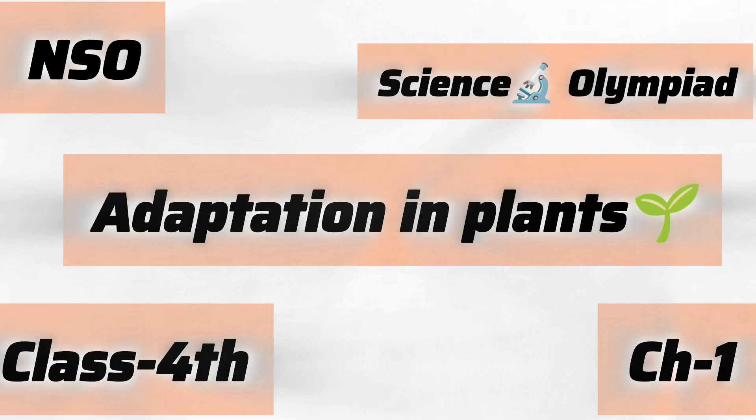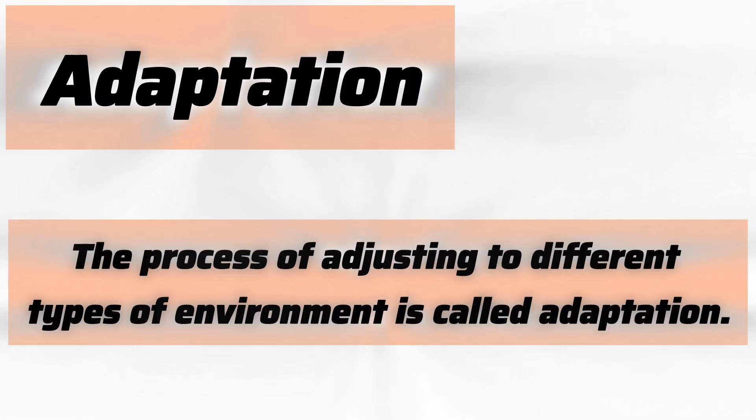Hello friends, today we are going to solve National Science Olympiad Class 4, Chapter 1 - Adaptation in Plants. First we should know what is adaptation. The process of adjusting to different types of environment is called adaptation.